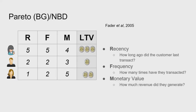Our first attempt at predicting customer lifetime value was made by Fader, who formulated the definition from earlier, and who managed to predict customer lifetime value using only three features: recency — how recently a customer was on the website; frequency — how many purchases they made in a finite amount of time; and monetary value — the total amount of revenue they generated on our website.